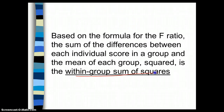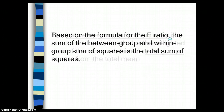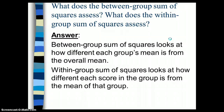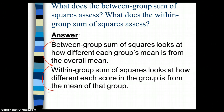Based on the formula for the F ratio, the sum of the between group and within group sum of squares is the total sum of squares — we're just adding them up. So if I were to ask you what does the between group sum of squares assess and what does the within group sum of squares assess, your answer would be: the between group sum of squares looks at how different each group's mean is from the overall mean, and the within group sum of squares looks at how different each score in the group is from the mean of that group.